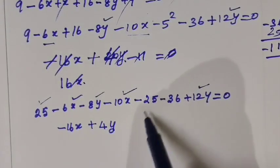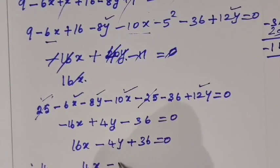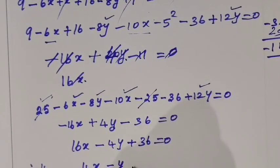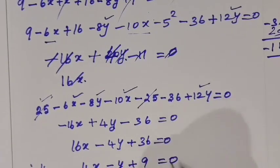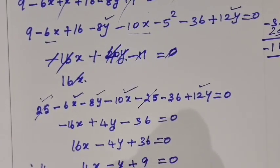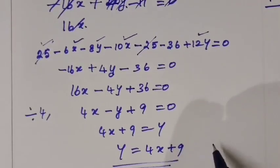So 4x minus y then plus 9 equal to 0. Minus y on the side. 4x plus 9 equal to y. That is y equal to 4x plus 9.